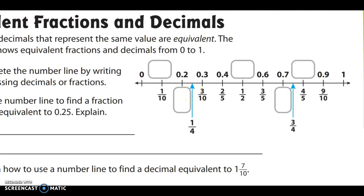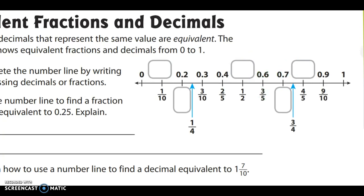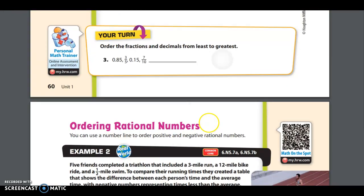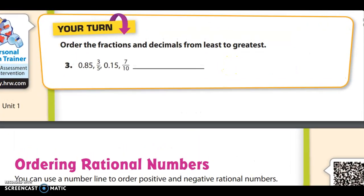On page 59, three-fifths is equal to 0.6, and seven-tenths is equal to 0.7. Those are the two values I need to include in my comparison back at the bottom of page 60. Now, don't forget that if some numbers go out to the hundredths place, we should make all of them go out to the hundredths place by annexing zeros — otherwise you'll get these wrong.